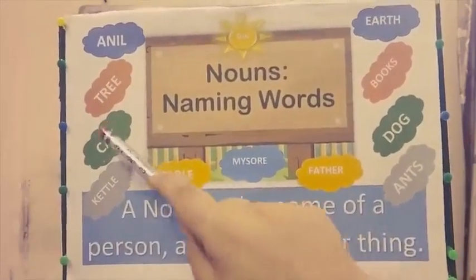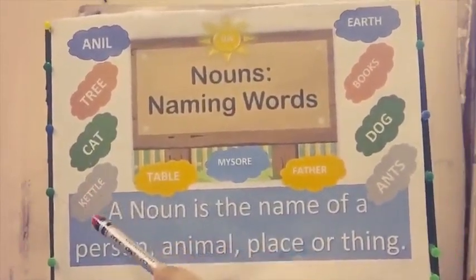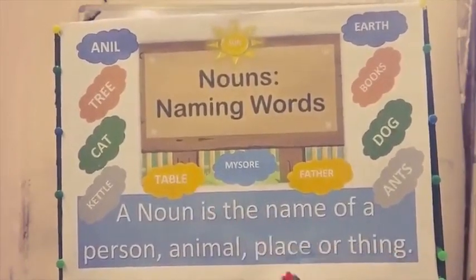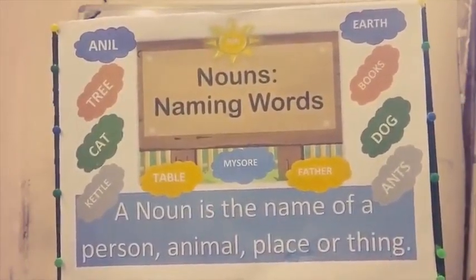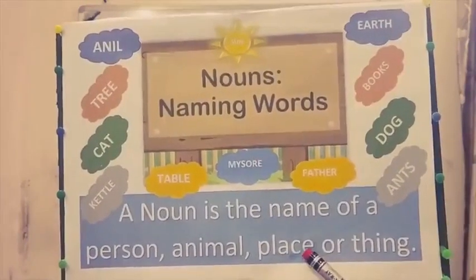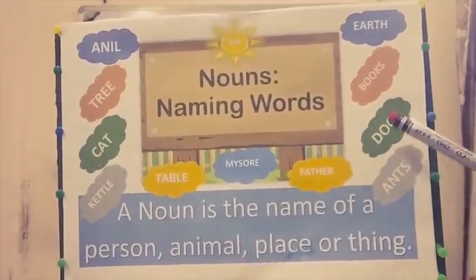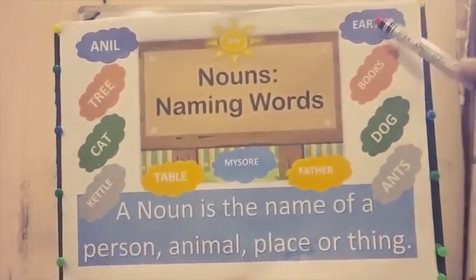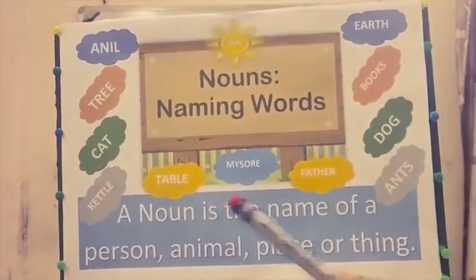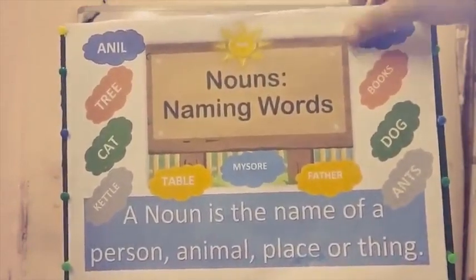Cat — cat is the name of an animal. Kettle — kettle is a thing. Table — table is also a thing. Mysore — Mysore is the name of a place. Similarly, father, ants, dog, books, earth, son — these are all names of person, animal, place or thing.